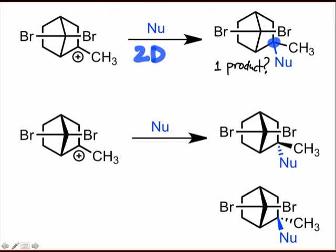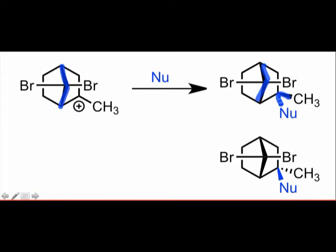But when we add wedges and dashes to include information about the third dimension to this otherwise flat representation, we can see that the association of the nucleophile establishes a new stereocenter, and there are two distinct directions of approach of the nucleophile that result in two different diastereomeric products. However, it's not exactly clear which of the two approaches is more favorable at this stage.